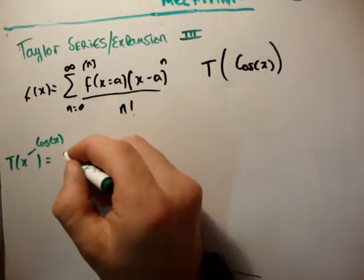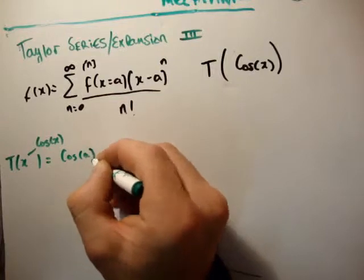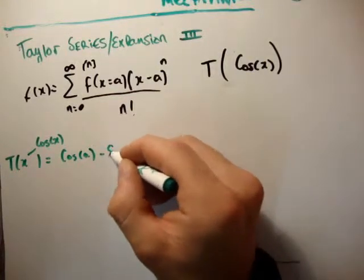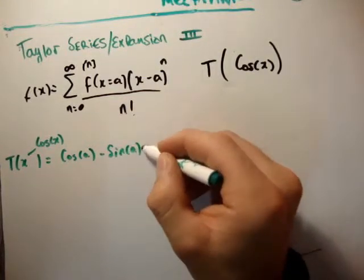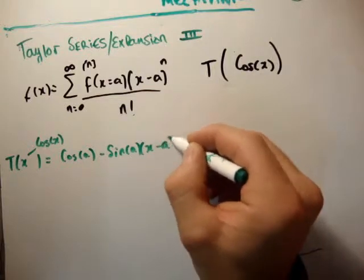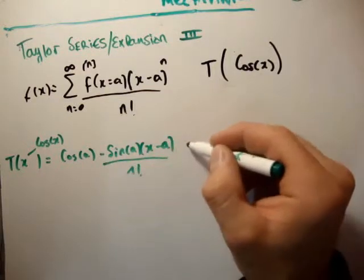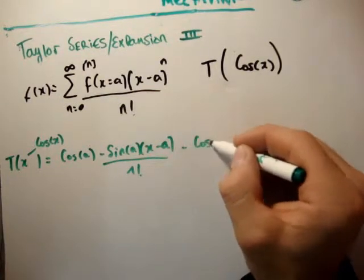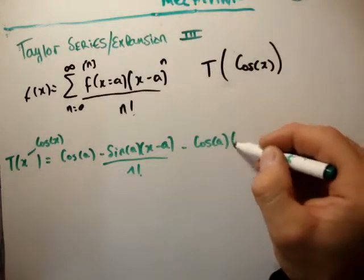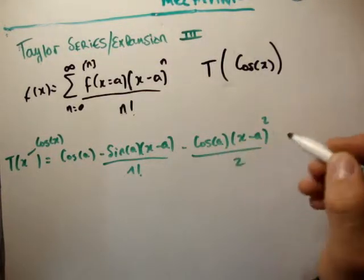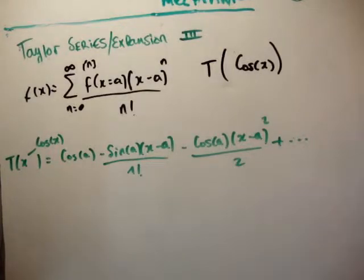is equal to c_0, which is cos(a), minus sin(a) times (x-a) divided by 1 factorial, minus cos(a) times (x-a) squared divided by 2 factorial, plus and so on.